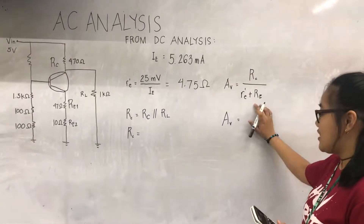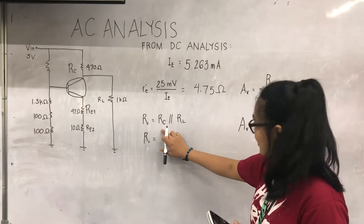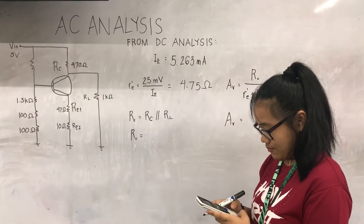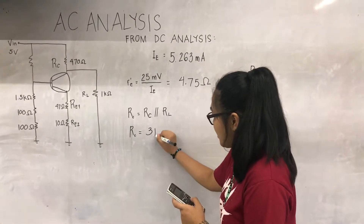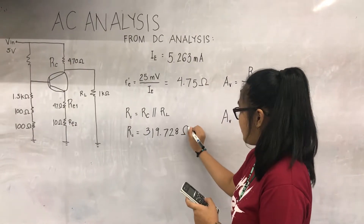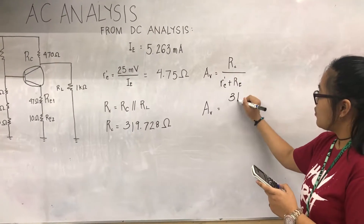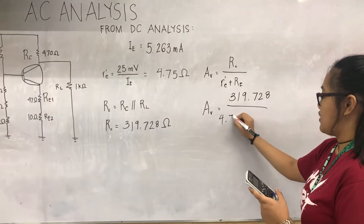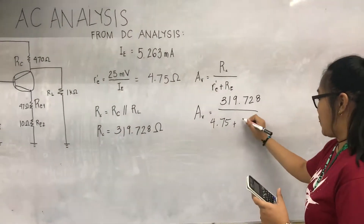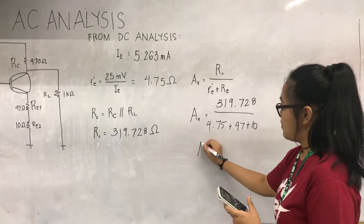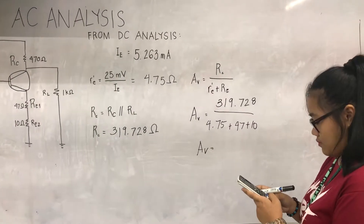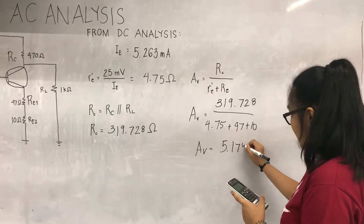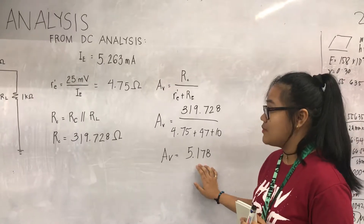For the voltage gain, we are to get the loaded resistance, which is the parallel of the collector resistor and the load resistor, which is the 470 ohm and the 1000 ohm. We have 319.728 ohms. For the voltage gain, we compute this by 319.728 ohms over the internal resistance added by the combination of the emitter resistance, which is 47 plus 10. The output voltage will be 5 times the input voltage.